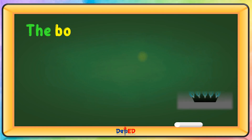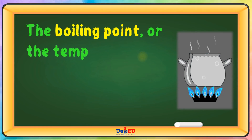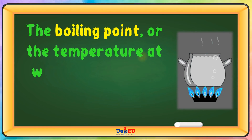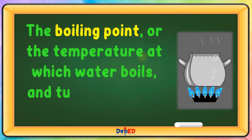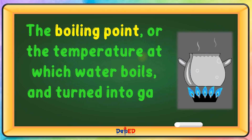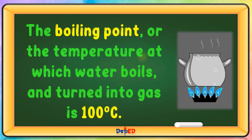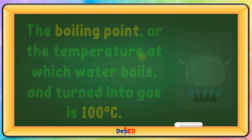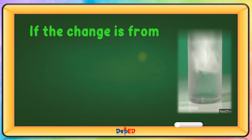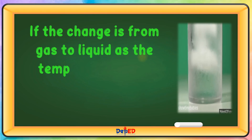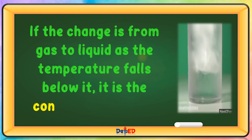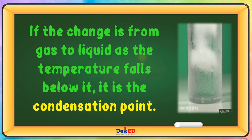The boiling point, or the temperature at which water boils and turns into gas, is 100 degrees Celsius. If the change is from gas to liquid as the temperature falls below it, it is called the condensation point.